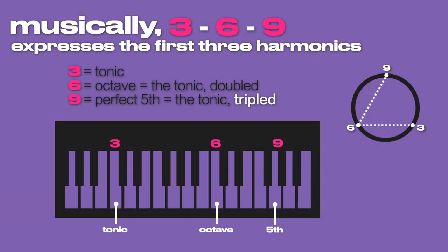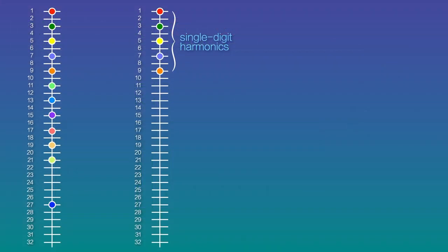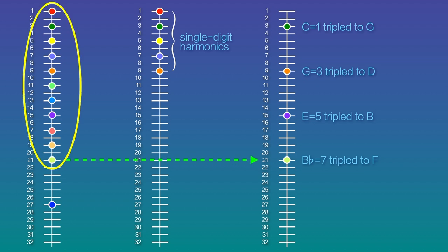Whenever a harmonic is tripled, it generates its own perfect fifth. When the first four single-digit harmonics are tripled, they populate every 7th harmonic through harmonic 21. And by harmonic 21, every note in the scale has been generated — except for A.